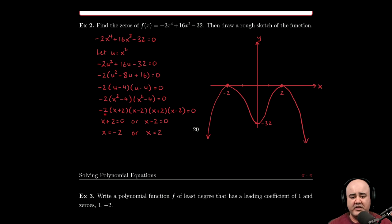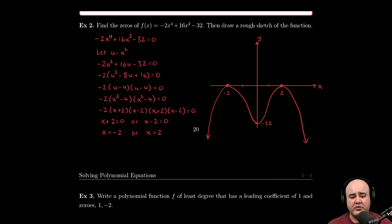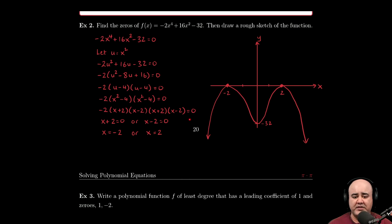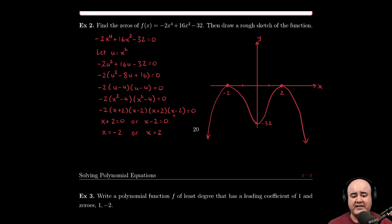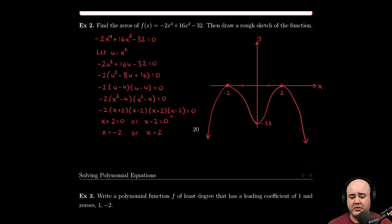Now at this stage, we have one, two, three, four, five things being multiplied, and the answer is zero. So the zero product property can be invoked here to say one of these has to be zero, we have no idea which one, but one of them must be zero.